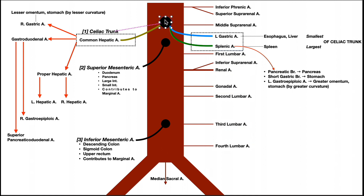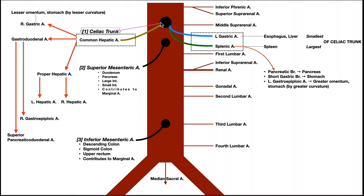The arteries coming off the anterior middle of the abdominal aorta are not paired. The largest and most superior of these is the celiac trunk. Immediately after branching off the abdominal aorta, it gives off three branches: the common hepatic artery, the left gastric artery, and the splenic artery.